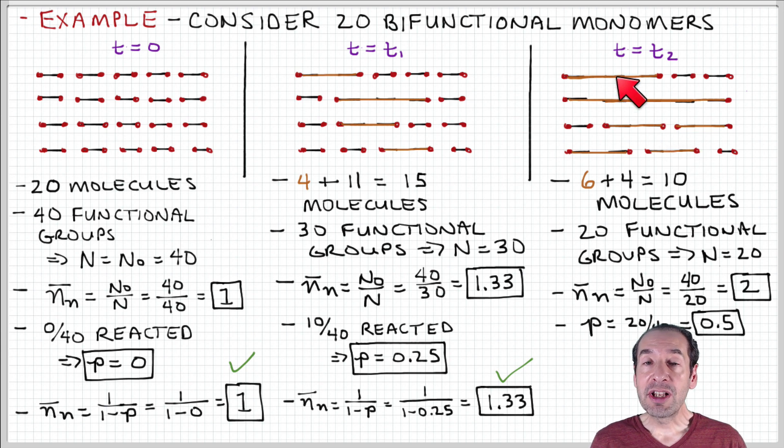In terms of molecules that have been produced by reactions between either monomers or between monomers and polymers or polymers and polymers, we have 6 of these molecules, and there's 4 monomer units remaining. So it's a total of 10 molecules that are left in our ensemble. We're going to have 10 times 2, or 20, functional groups. So there's 20 functional groups present at time T2. Our number average degree of polymerization then is the ratio of the original number of functional groups to the ones that are left, which is 2.